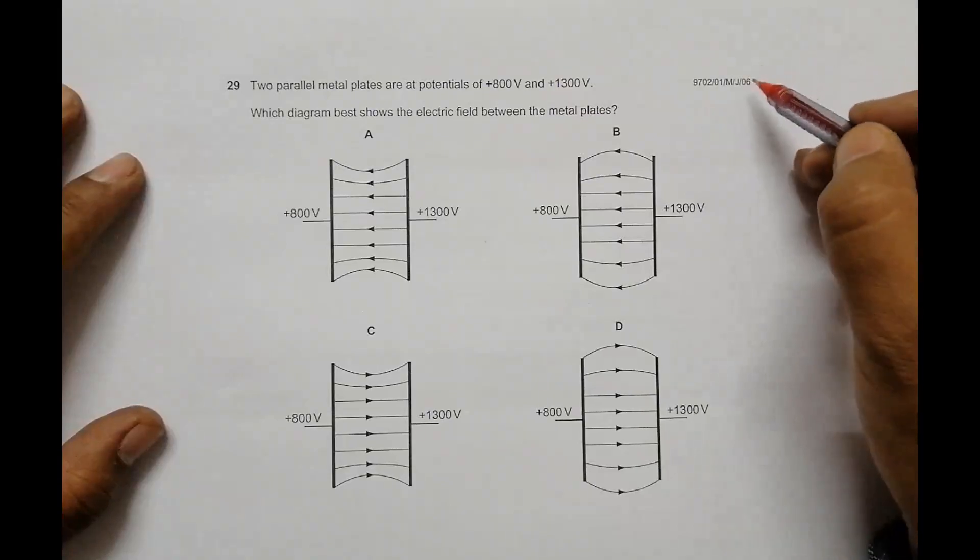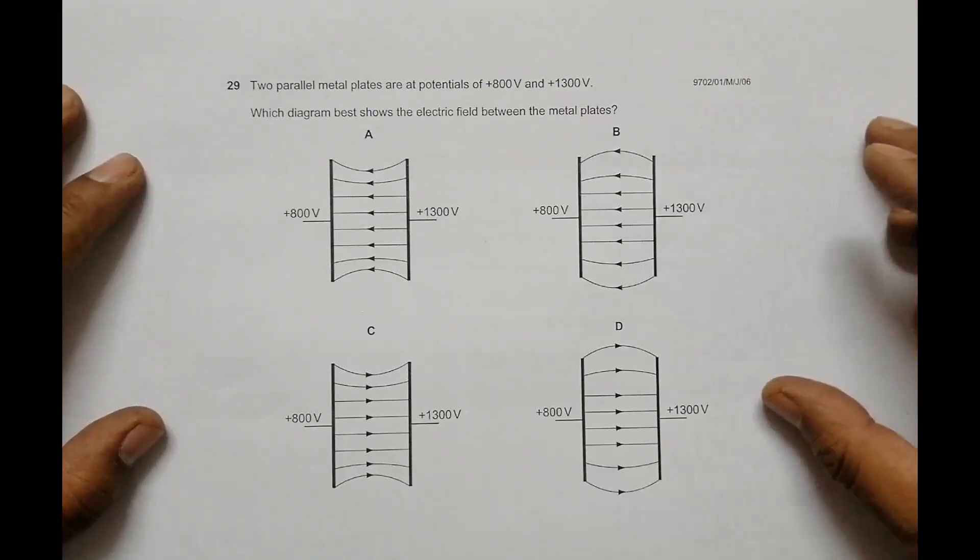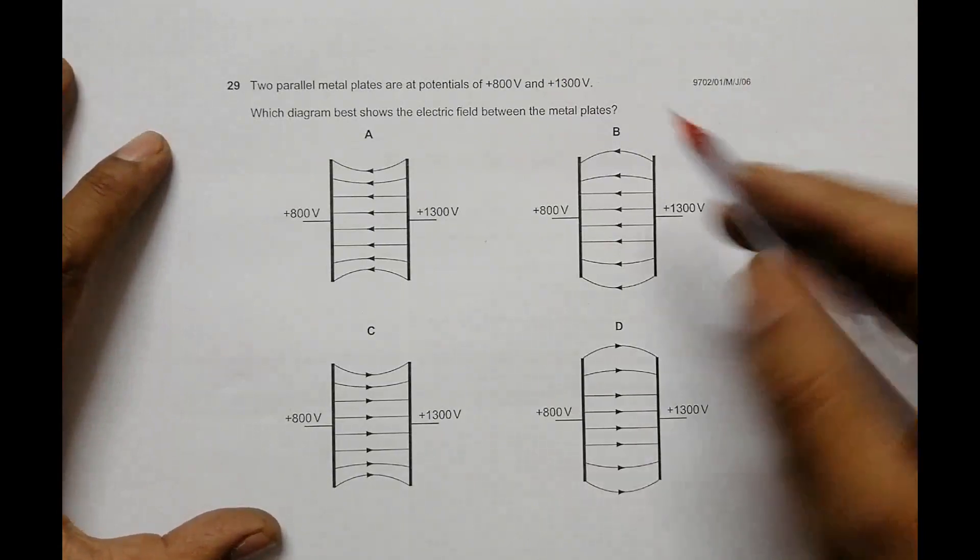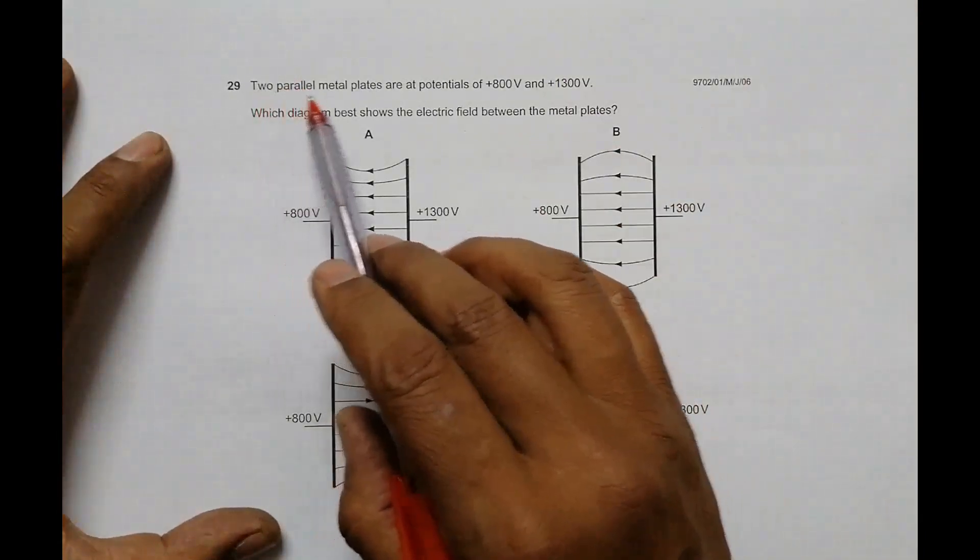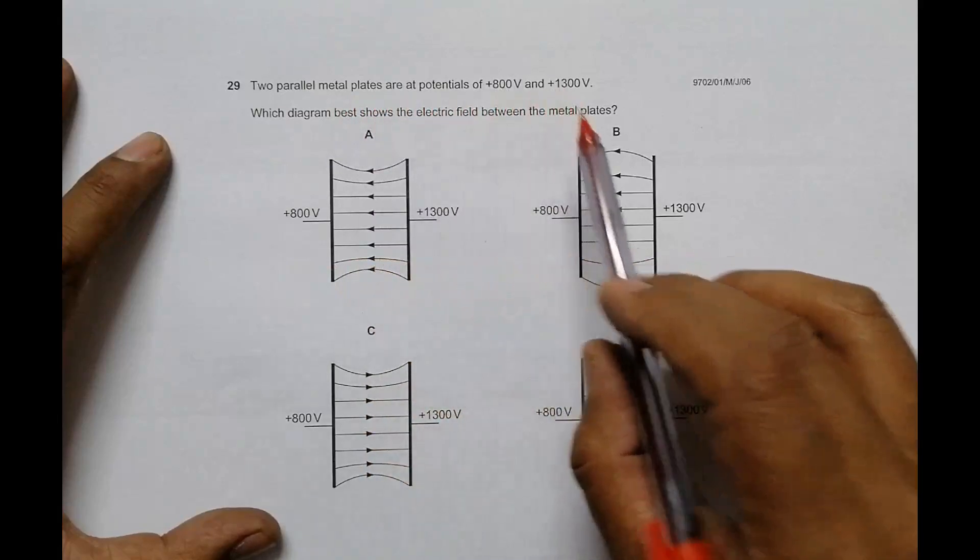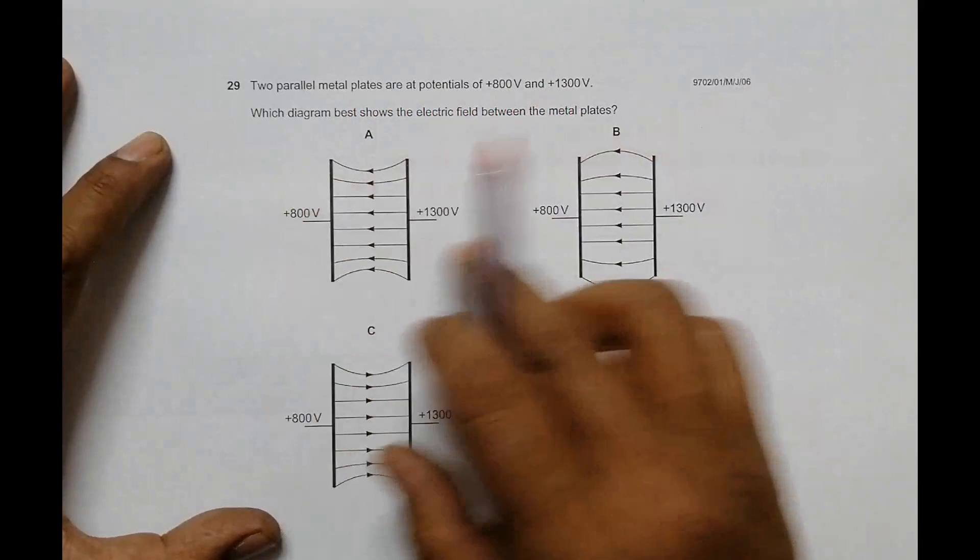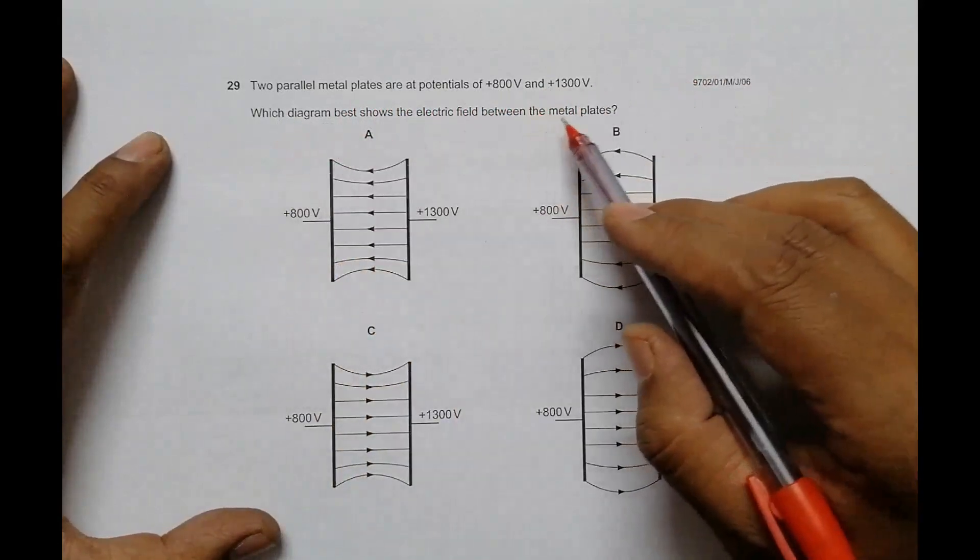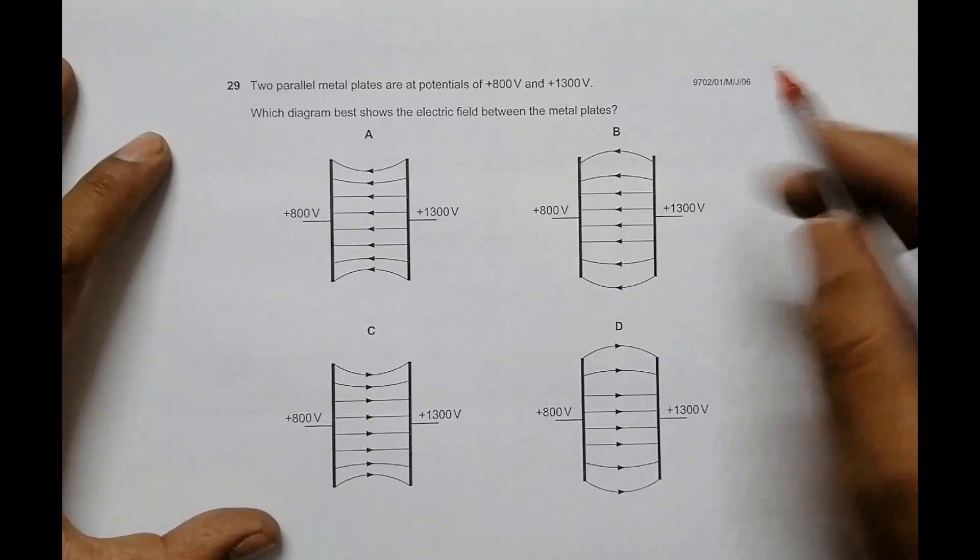Hello folks, this is 2006 paper 1, question number 29, which is concerned with the chapter on electric field. It says that two parallel metal plates are at potentials of +800V and +300V. Which diagram best shows the electric field between the metal plates? We have these diagrams here.